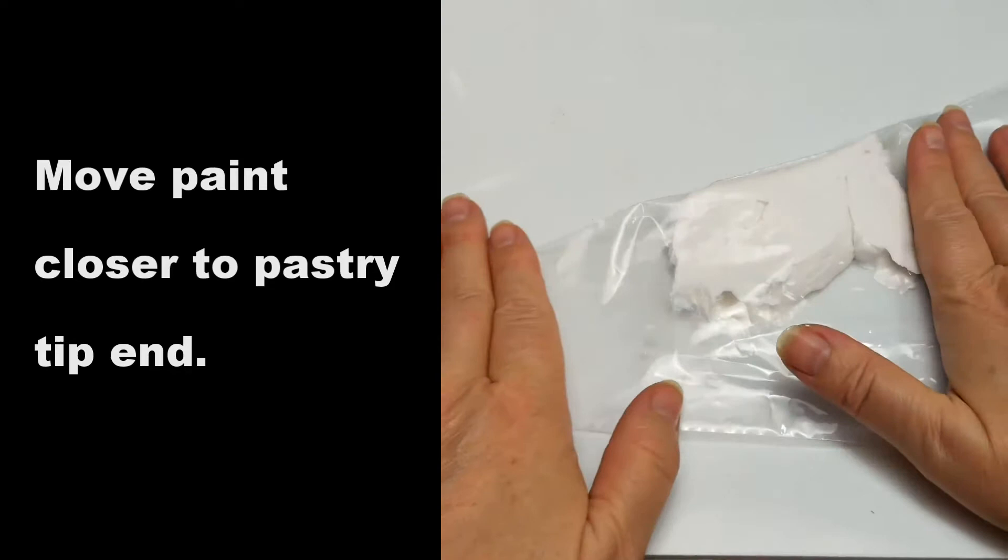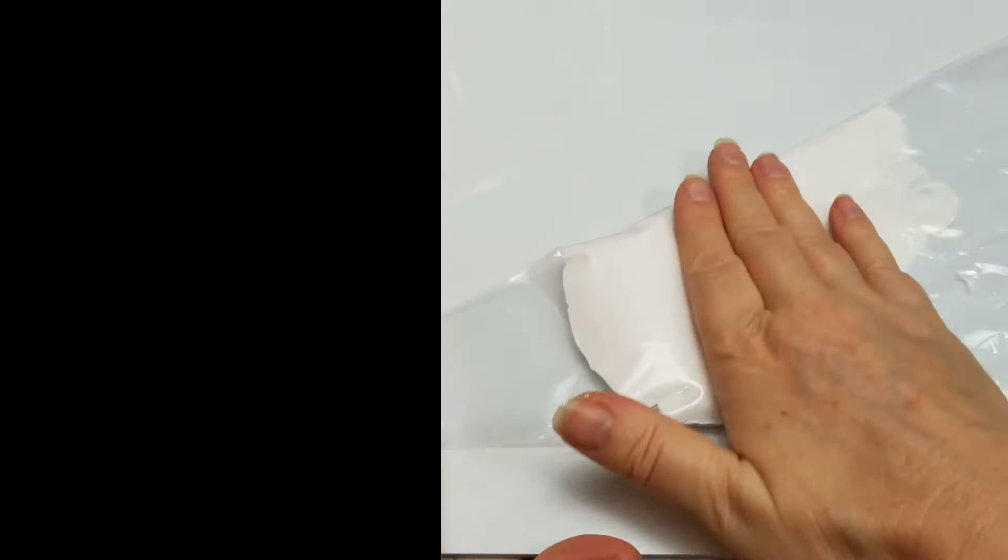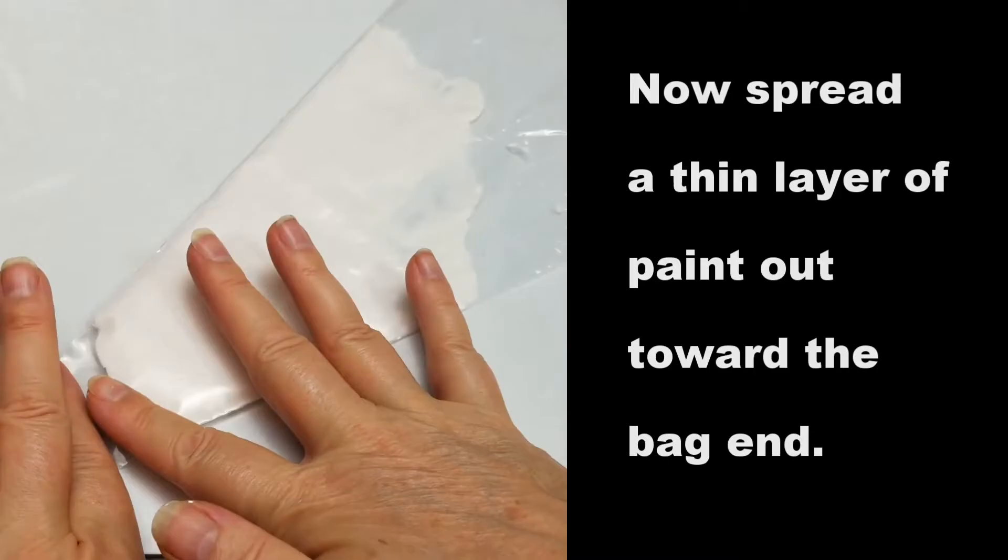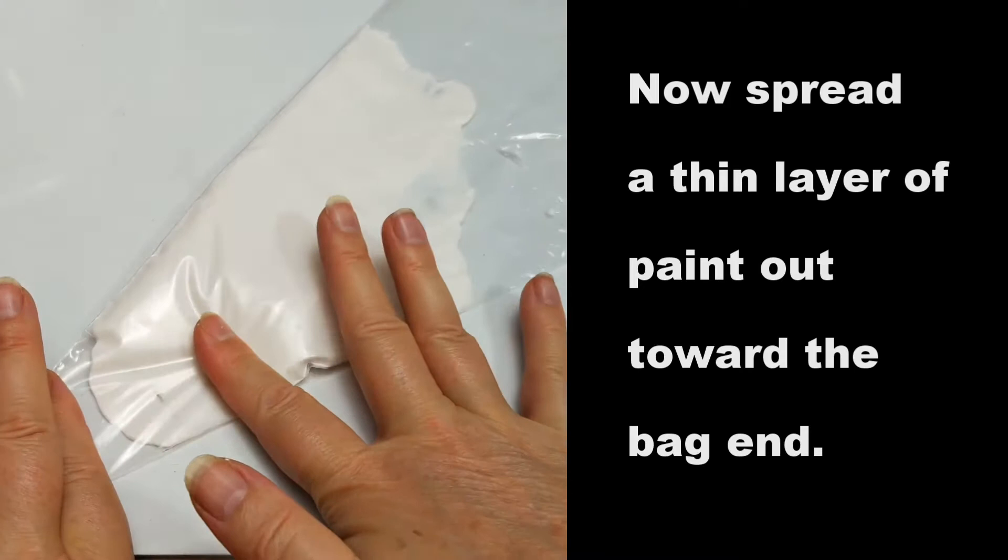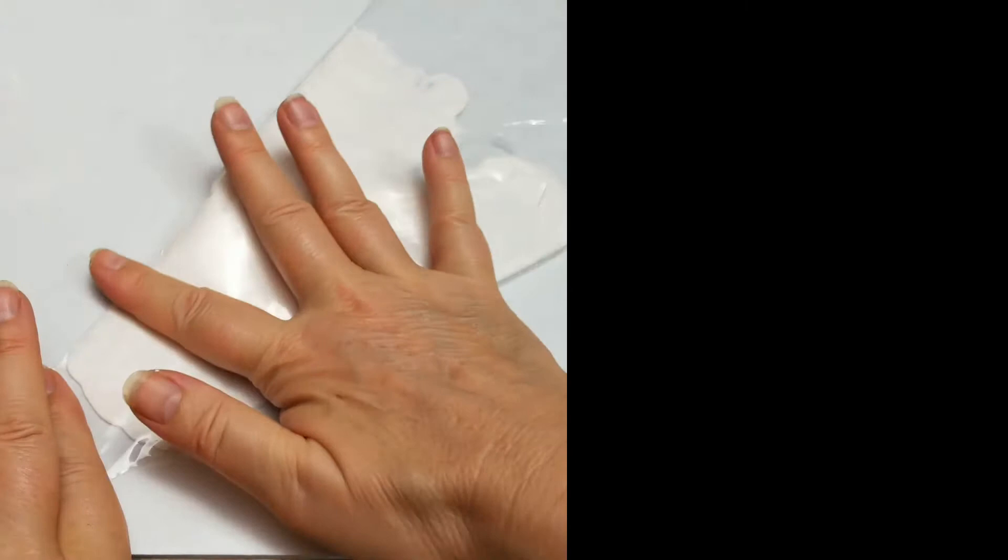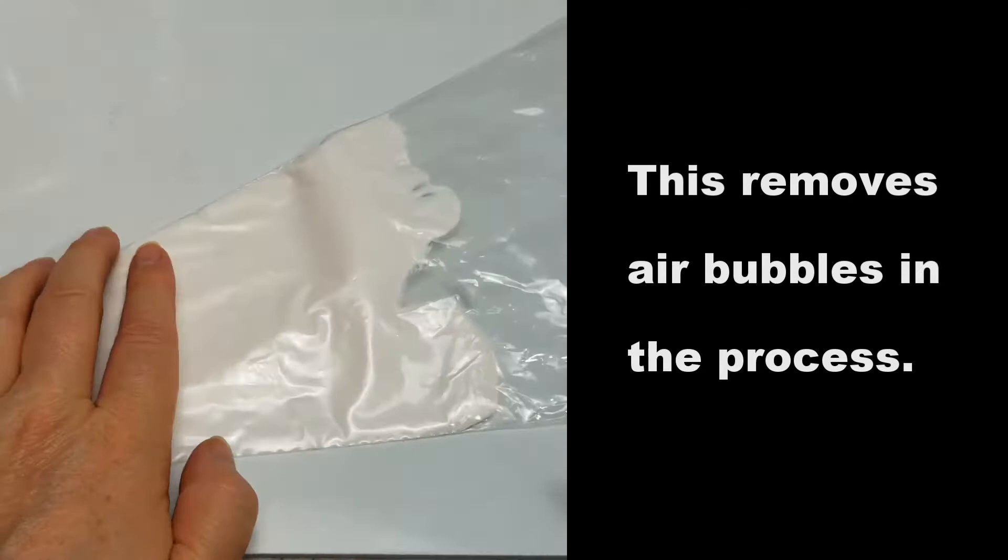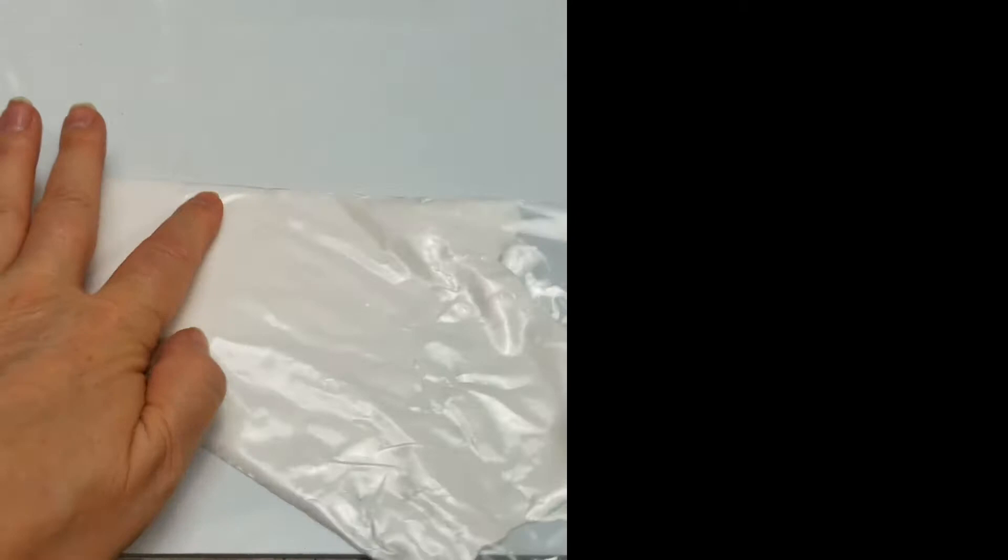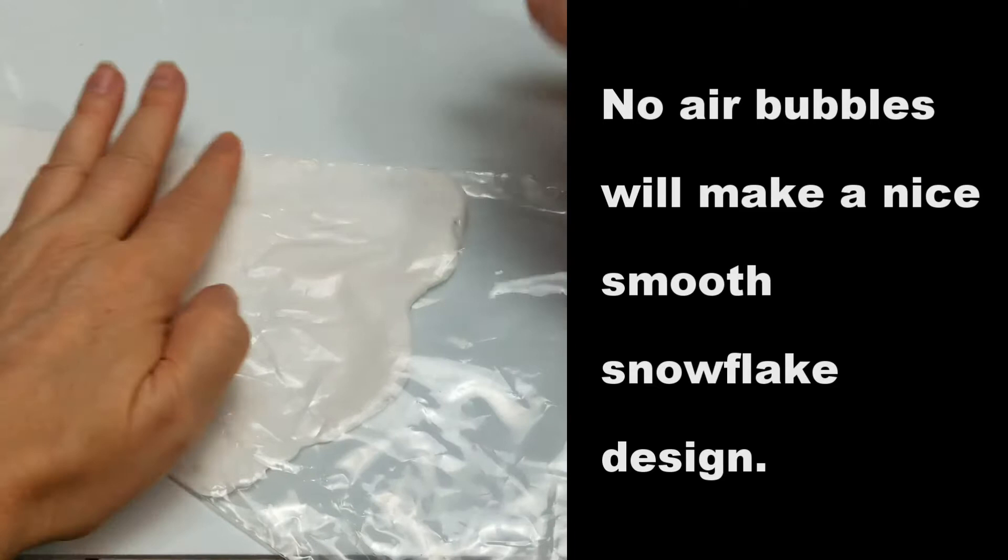Move paint closer to the pastry tip end. Now spread a thin layer of paint out toward the bag end. This removes air bubbles in the process. No air bubbles will make a nice smooth snowflake design.